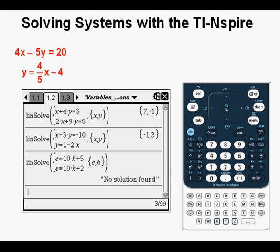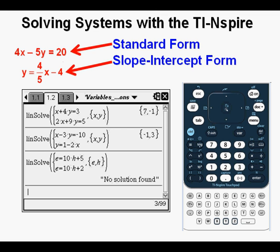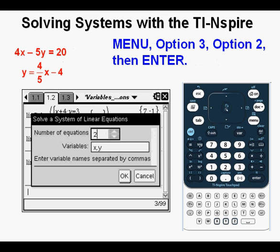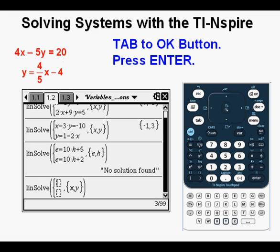Let's look at this system of equations. We have 4x minus 5y equals 20 and Y equals 4 fifths X minus 4. Again, we have one equation in standard form and one in slope intercept form. From here, we go to our system of equations by going to Menu, down to Option 3, Algebra, then Option 2, Solve System of Linear Equations, then Enter. Since we have two equations, tab down to the OK button, then press Enter. Enter the equations we have in our system. Press Enter.